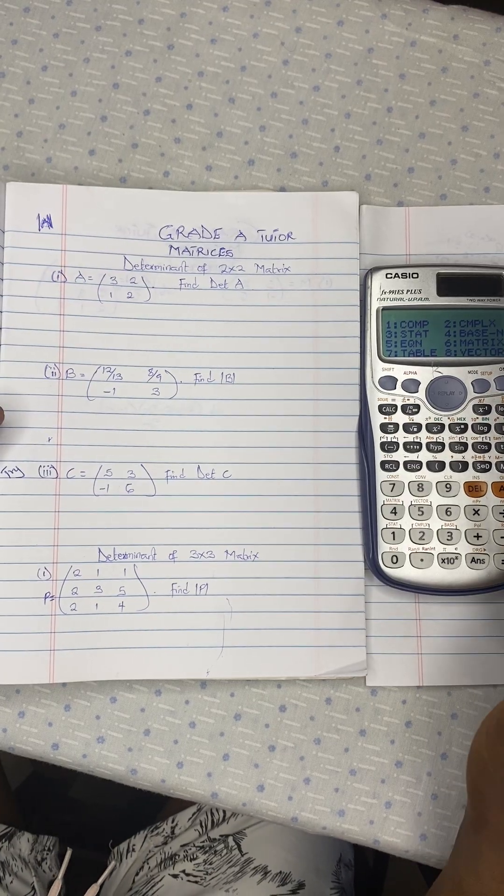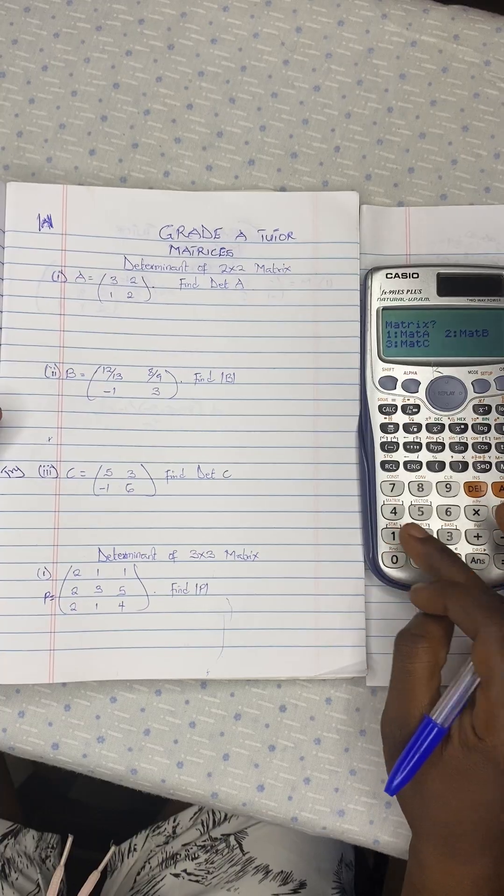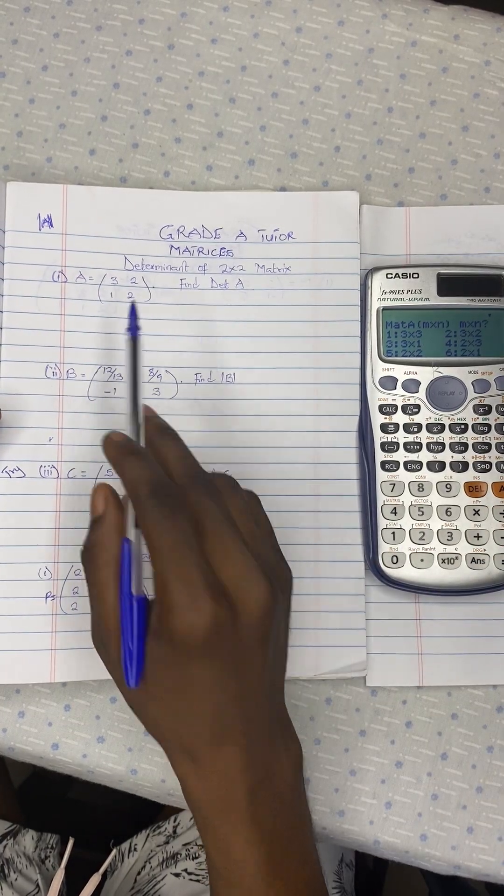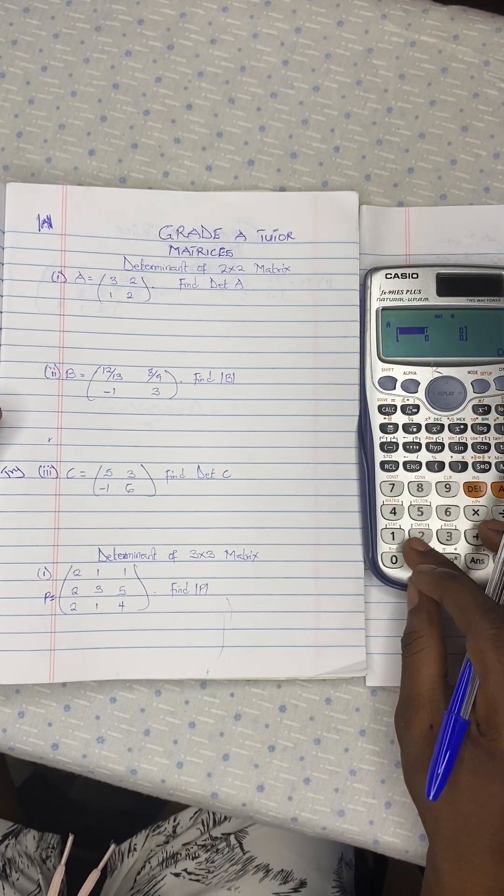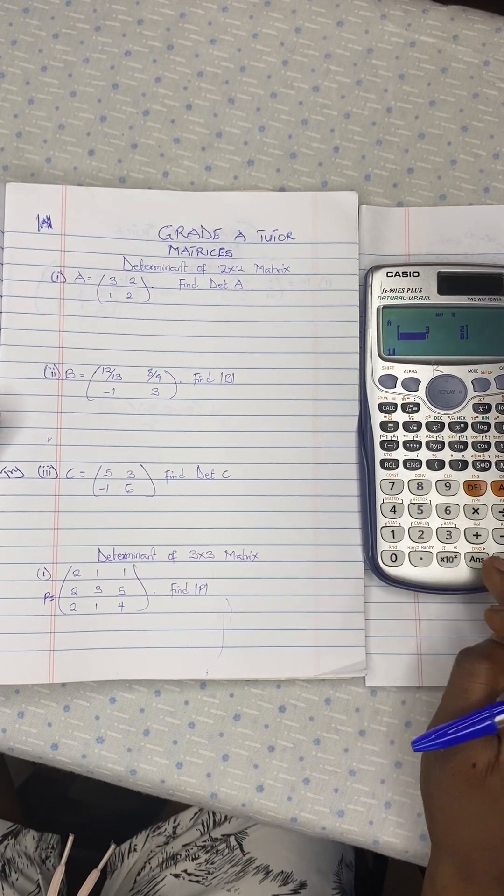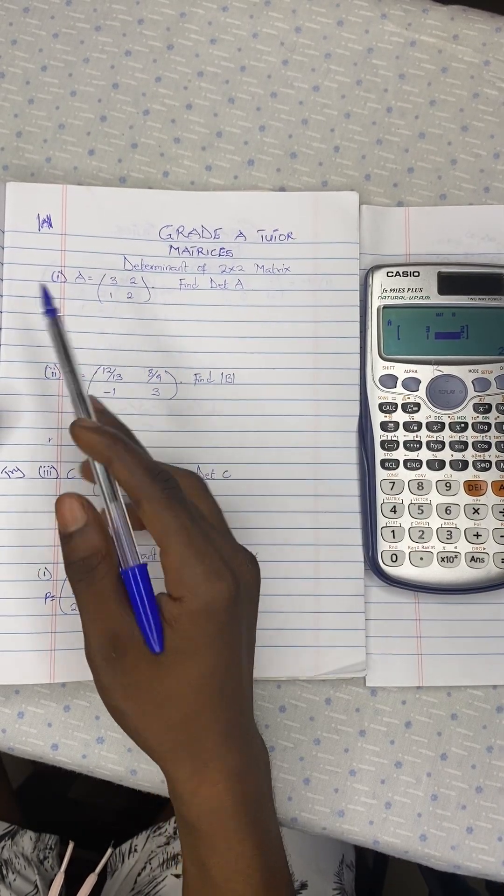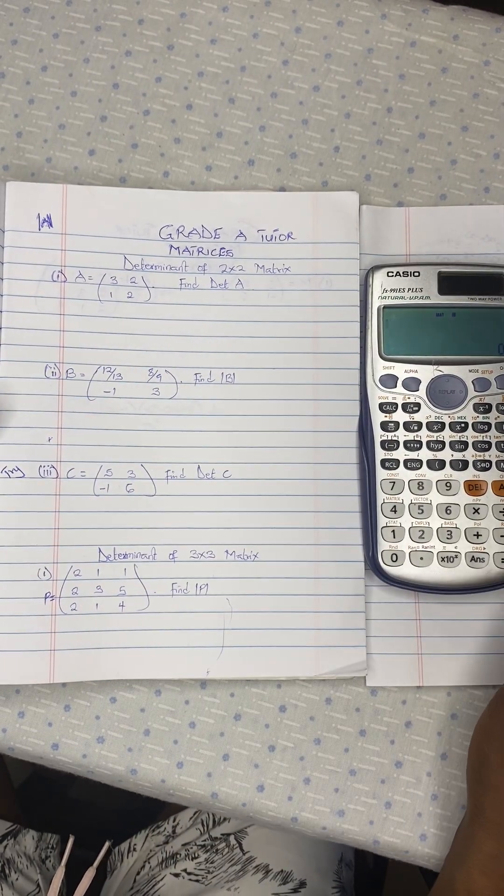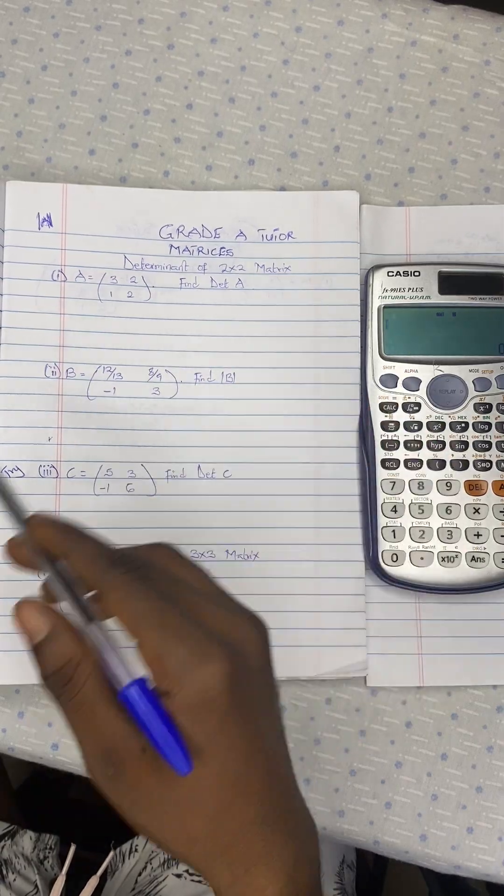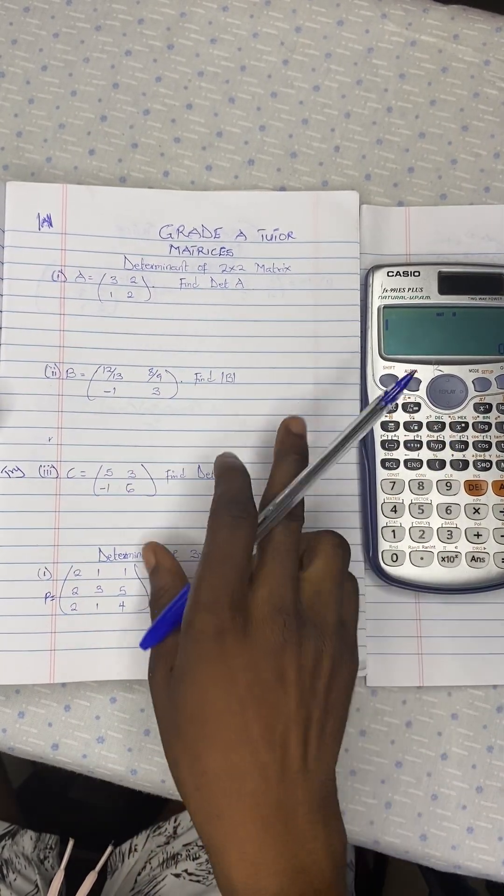Mode, then we go to option 6. We choose matrix A. It is 2x2, so 5. Then we say 3, 2, 1, 2. Right, so this is just one matrix. We save it. Now we don't need any matrix to multiply or whatever. So we are going straight for it to calculate the determinant.